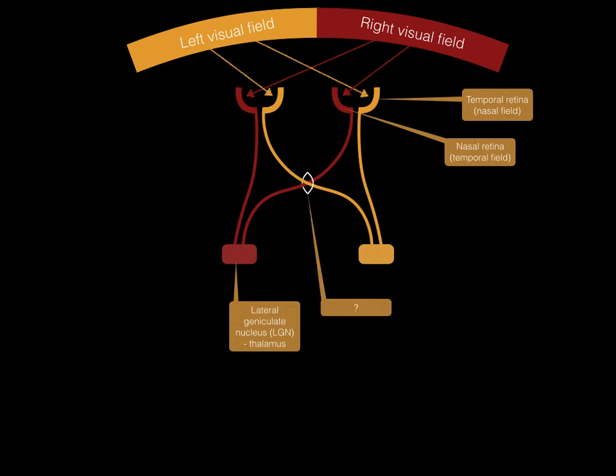This area is called the optic chiasm. We have come to our first visual field defect example. If there was a lesion affecting the optic chiasm, what visual field defect would you expect? A bitemporal hemianopia — bitemporal meaning a loss of vision in the temporal visual field of each eye.